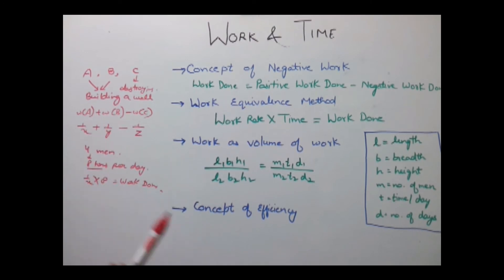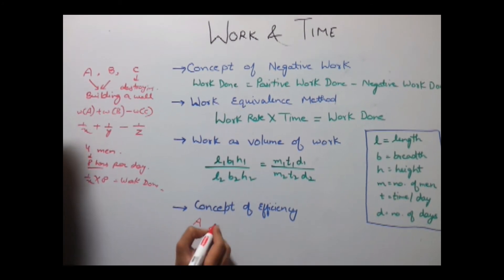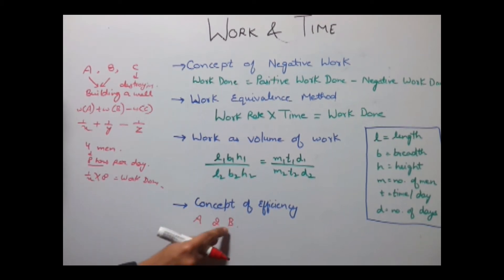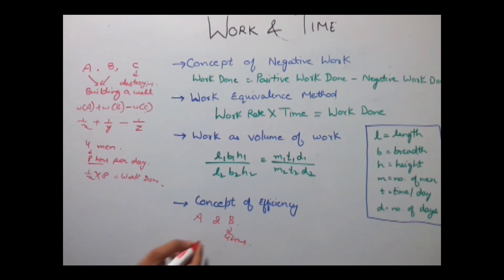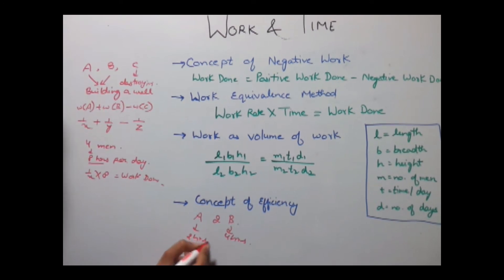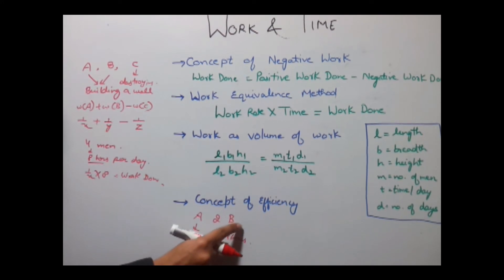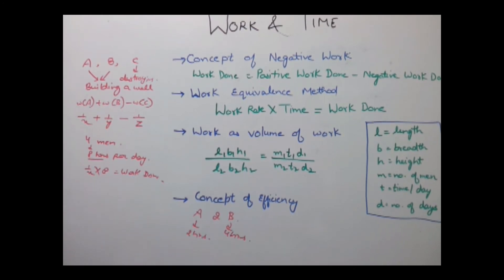Now the last concept which comes with work and time is the concept of efficiency. While solving the questions we generally come that A is twice more efficient than B. This means that A can complete the work by B in half of the time. Say if B takes 4 hours to complete the work then A will take only 2 hours, or we can also say that in the time that B is using to complete the work, A can do that work twice in that same amount of time. Now all these concepts will be more clear by some examples.